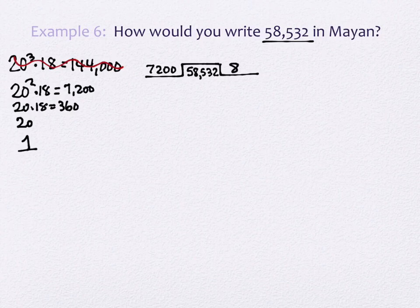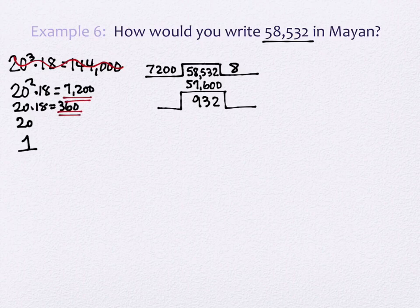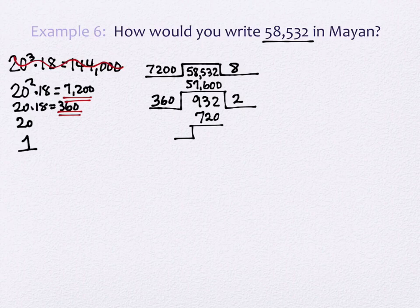We want only the whole number part from the division. So 58,532 divided by 7,200 gives a whole number of 8. We put the 8 on the right-hand side, then multiply: 8 times 7,200 is 57,600. We put that underneath and subtract: 58,532 minus 57,600 is 932. Now we're going to divide by 360. How many 360s are there in 932? There are two. Two times 360 is 720. If we subtract, we get 212.